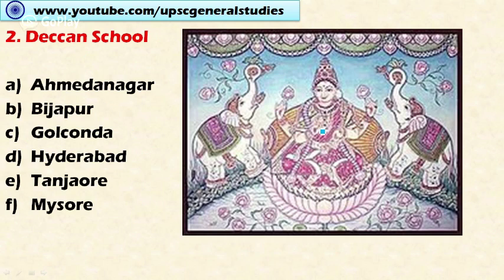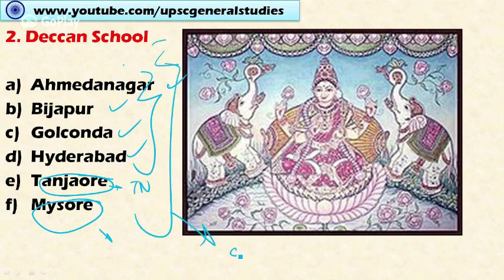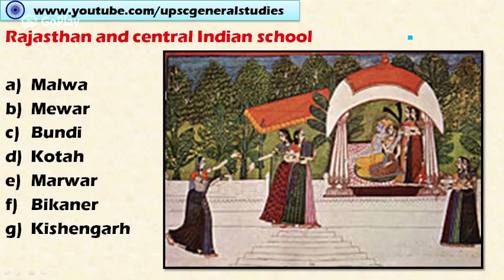The second school is the Deccan school, inspired by the Mughal school in the area of miniature painting, but incorporating localized styles and philosophies. Under the Deccan school we have Ahmadnagar, Bijapur, Golconda, and Hyderabad. Separate from these are the Tanjavur school in Tamil Nadu and the Mysore school in Karnataka, together forming the South Indian school of painting, where gods are predominantly depicted and paintings are sought-after during festivals.